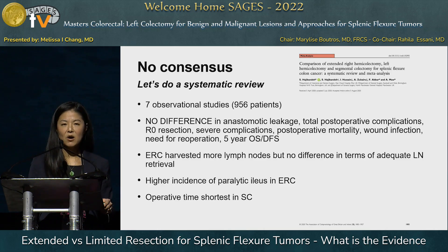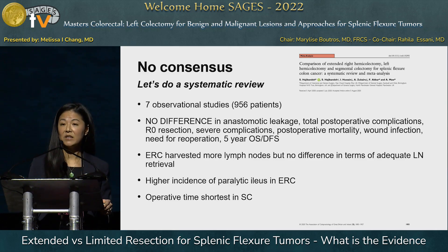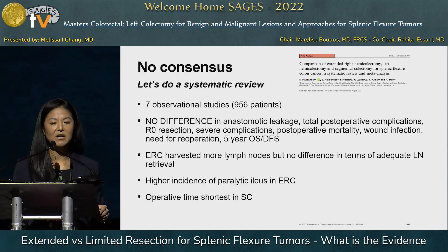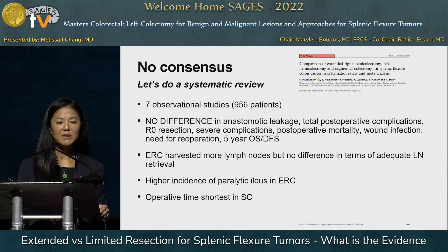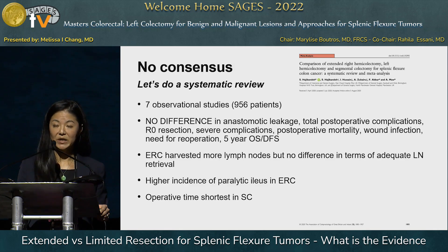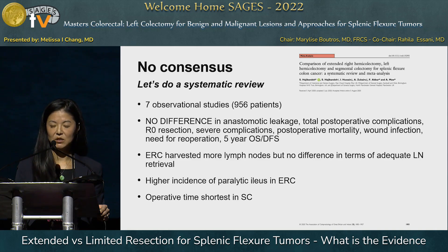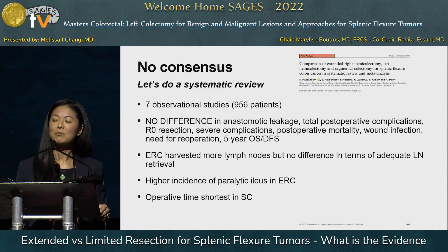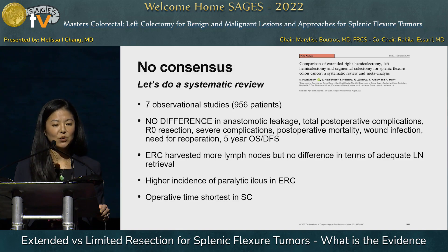There's no consensus, only small observational studies. A UK systematic review from seven observational studies including nearly 1,000 patients found no difference in anastomotic leakage, total postoperative complications, R0 resection, severe complications, postoperative mortality, wound infection, need for re-operation, or five-year overall and disease-free survival. Extended right colectomy harvested more lymph nodes, but there was no difference in adequate lymph node retrieval, defined as ≥12 lymph nodes. There was a higher incidence of paralytic ileus in the extended right colectomy group, possibly related to more emergent surgery and concern for cecal blowout. Operative time was shortest in the segmental colectomy group.